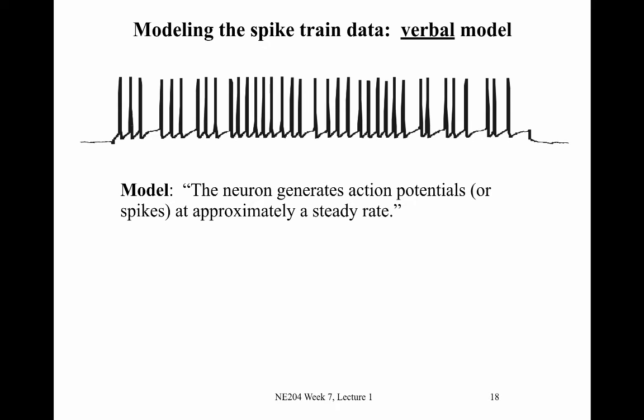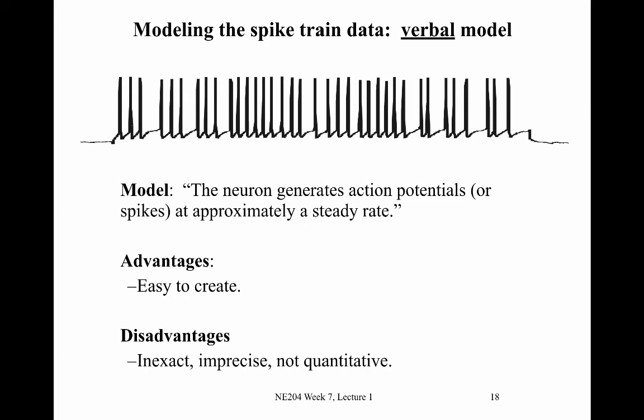A verbal model might state: this neuron generates action potentials at approximately a steady rate. This captures some notion of the neuron's activity — it does spike and the rate is approximately steady. The advantage is that it's very easy to create. The disadvantage is that it's inexact and imprecise: what do we mean by approximately steady rate? It's not very quantitative and doesn't tell us about the mechanisms generating this spiking activity.